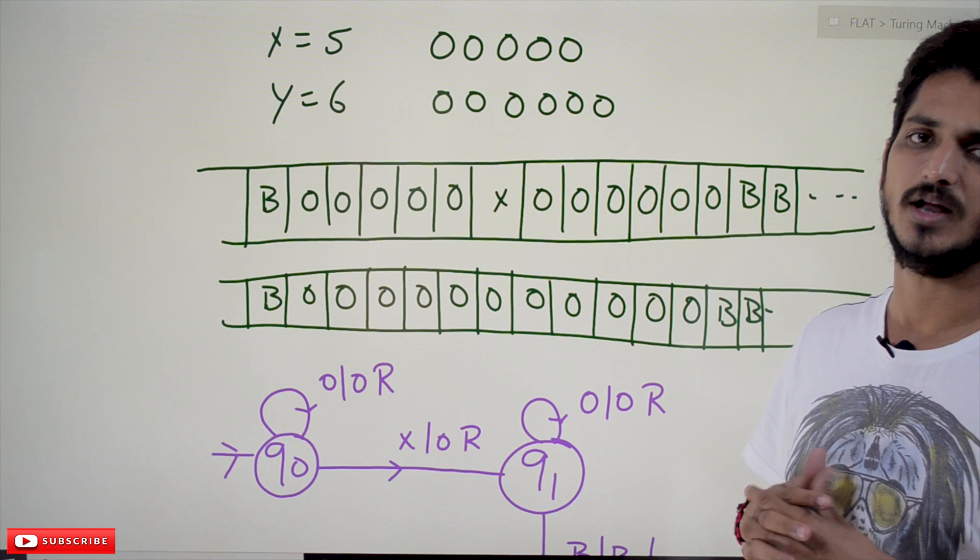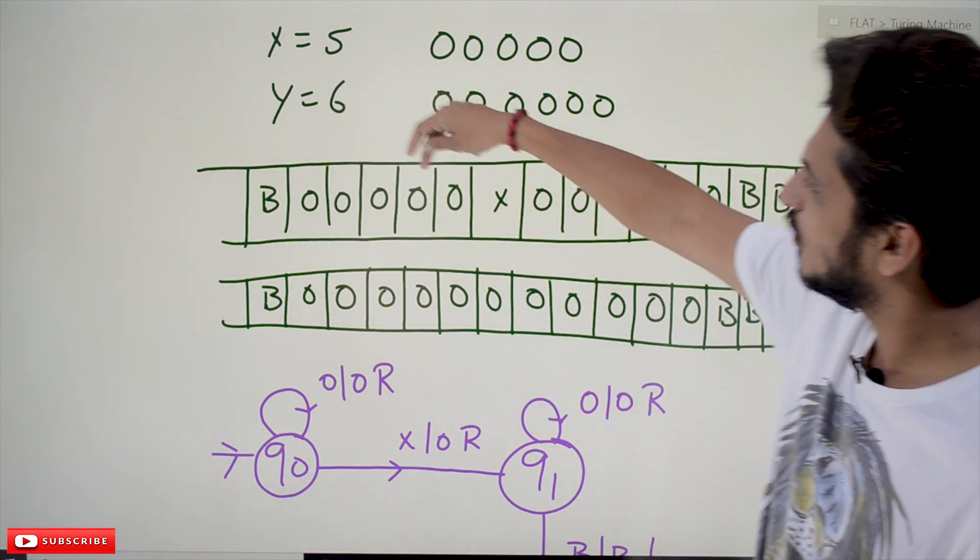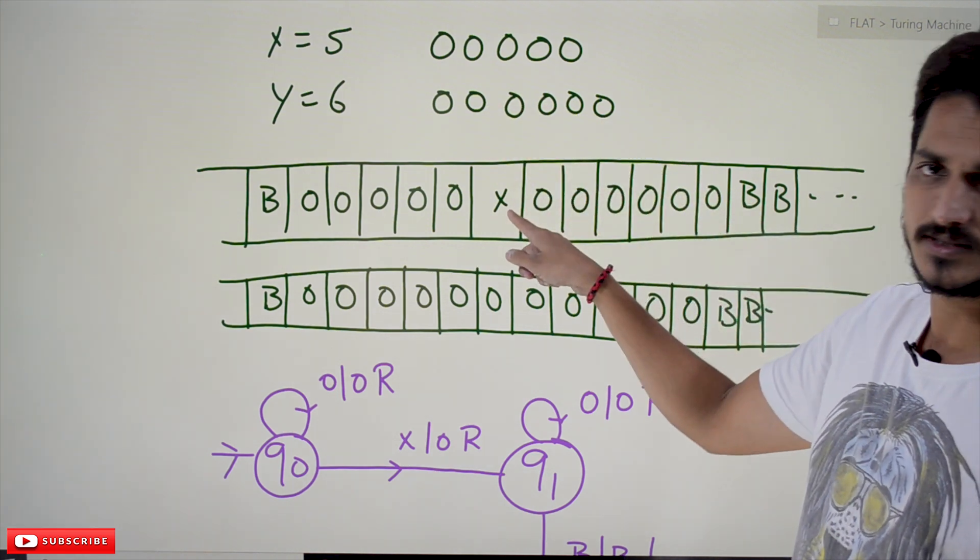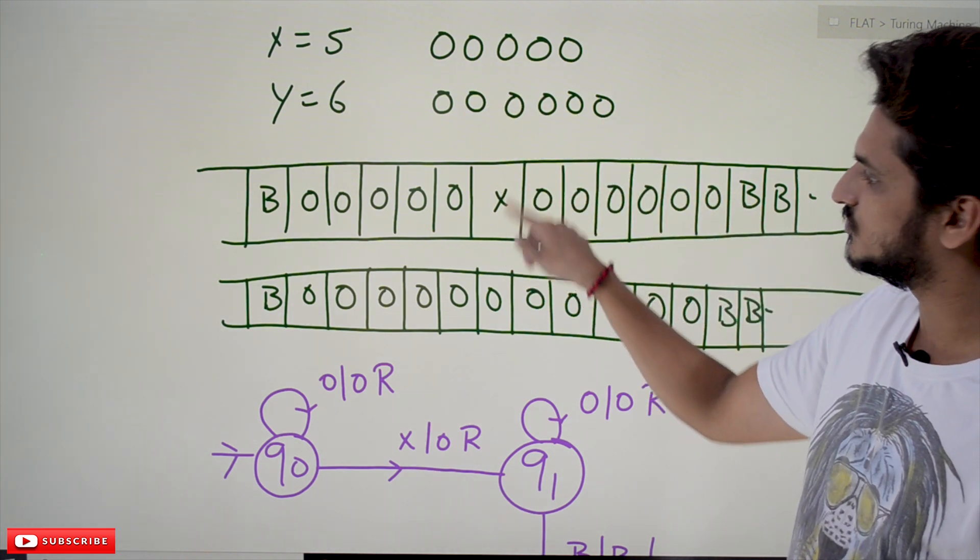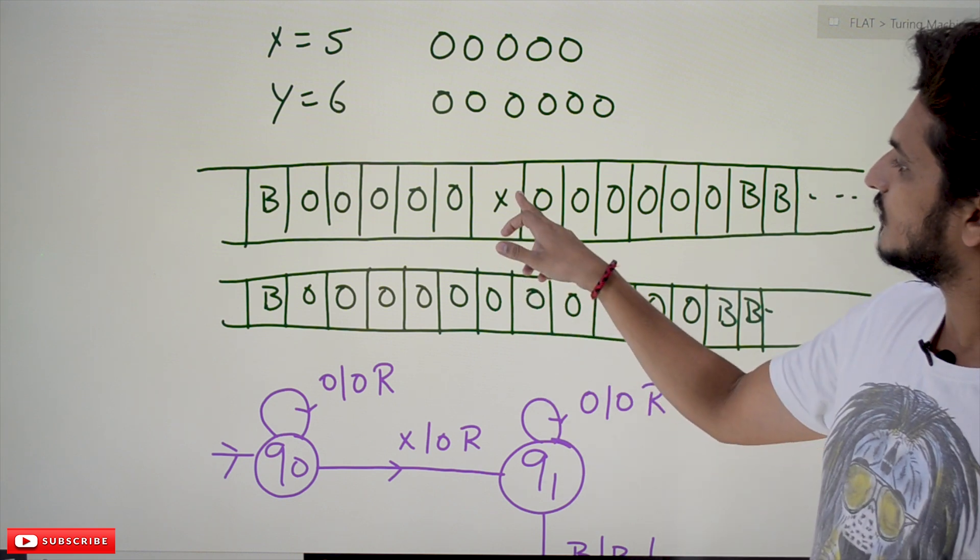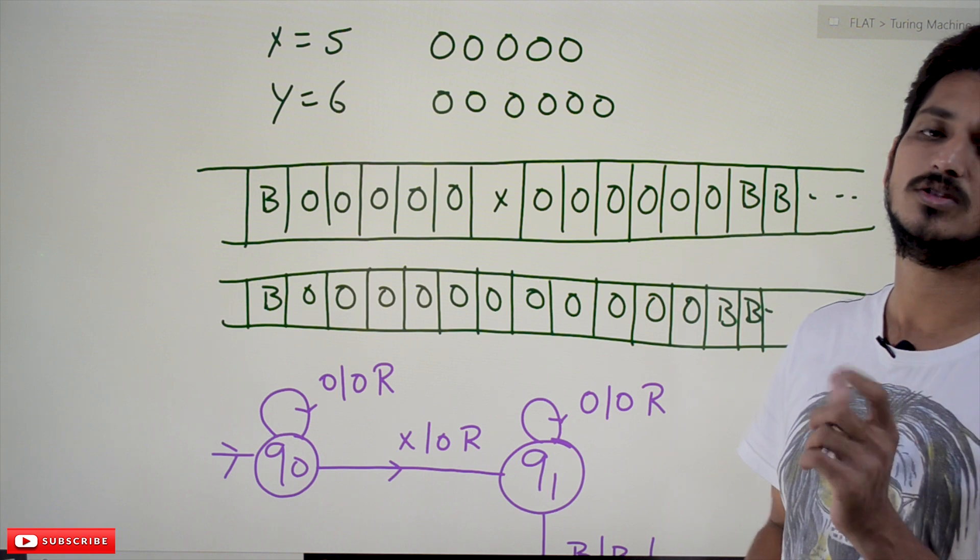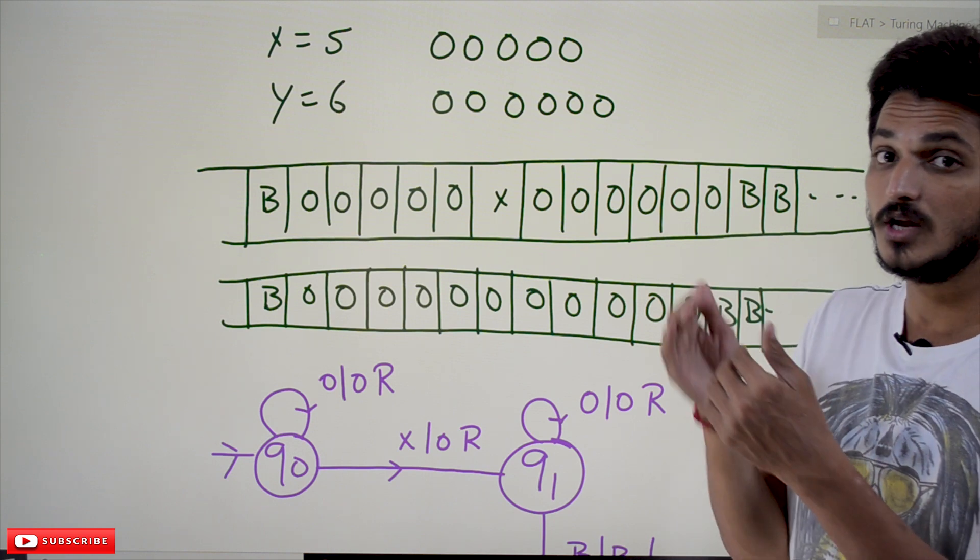So what we do here is we start from here and move until you find x. Whenever you find x, we make it 0, we convert it into 0. After that, move again. How many zeros are there? Total 12 zeros are there, which means we have to reduce one zero because we converted this x into 0.